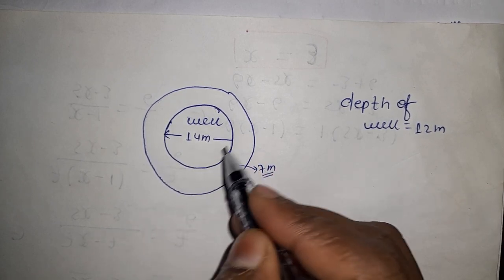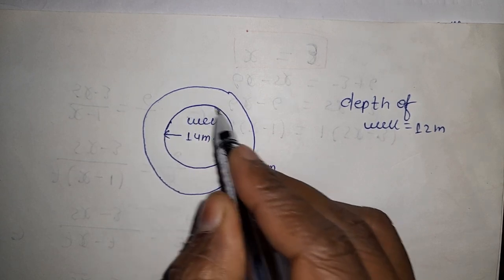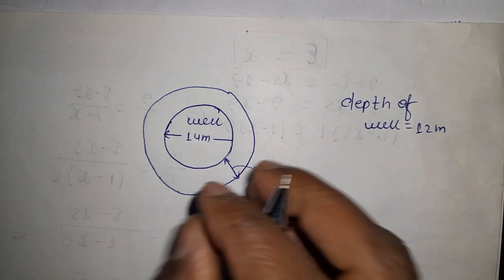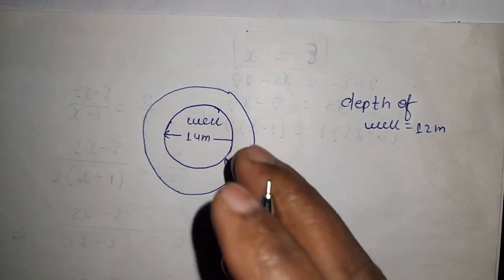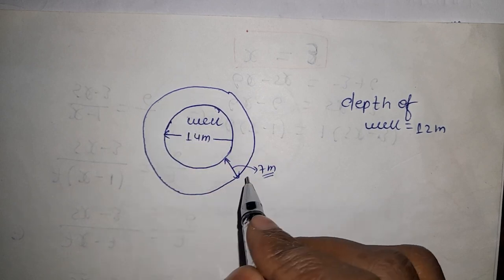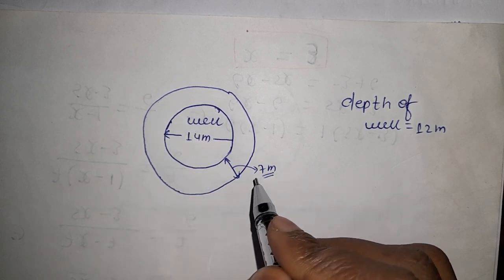The total earth that came from digging the well, we've used it around here to make the embankment. No extra earth was added, nothing was removed - whatever earth came out, we used it there, and its width is 7 meters everywhere.